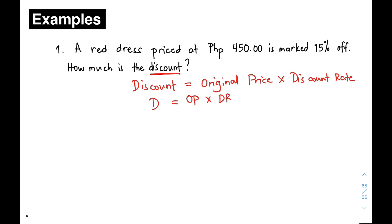In the given problem, your OP or original price is equal to 450 pesos, while your discount rate DR is equivalent to 15%. Remember, if you have DR to be used in the formula, you need to convert it into decimal — 15% is equivalent to 0.15.